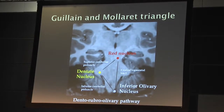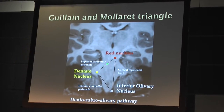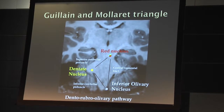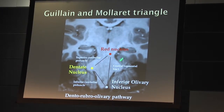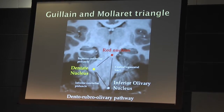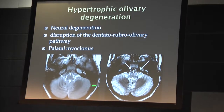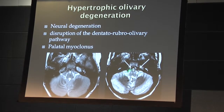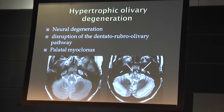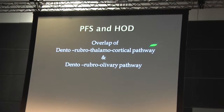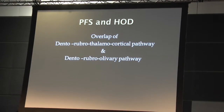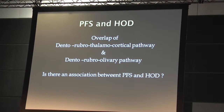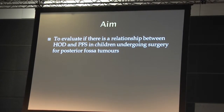Going back to the previous image: an insult to the dentate nucleus or superior cerebellar peduncle can cause an abnormality in the contralateral inferior olivary nucleus. Or if you have a problem with the red nucleus or a disruption of the central tegmental tract, it will cause problems in the inferior olivary nucleus on the same side. This is the normal lower medulla, and you can see that the olive looks brighter on the T2 image and a bit hypertrophied. So the dentorubrothalamocortical pathway and the dentorubro-olivary pathway overlap — that's the association between posterior fossa syndrome and hypertrophic olivary degeneration that we set out to find.